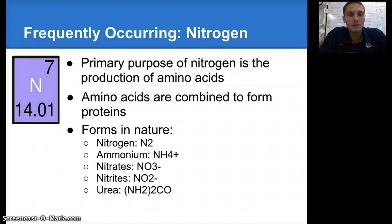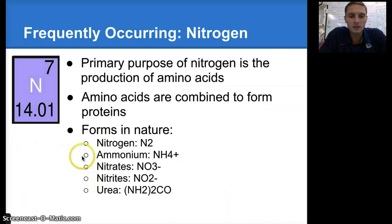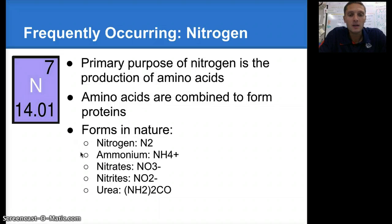There are a number of different forms in nature that nitrogen can be found. If you've ever had a fish tank, you've probably measured some of these different levels. Nitrogen, ammonium, nitrates, nitrites, and urea — these are all different types or forms of nitrogen that can be found in the environment.